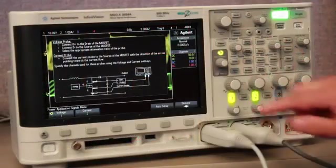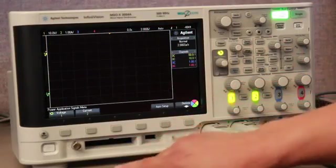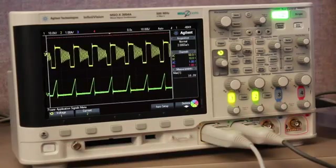In this short video, I will show you how to use the optional power measurements application on the Agilent 3000 X-Series oscilloscope. This application is a power measurement and analysis option that is integrated into the InfiniVision 3000 X-Series oscilloscope. It provides a quick and easy way of analyzing the reliability and efficiency of switching power supplies.